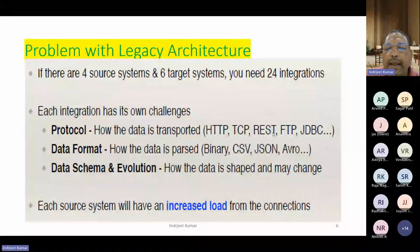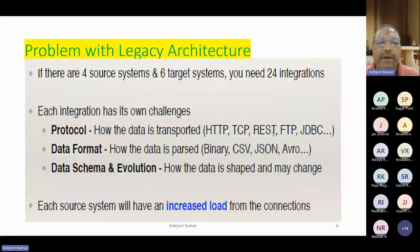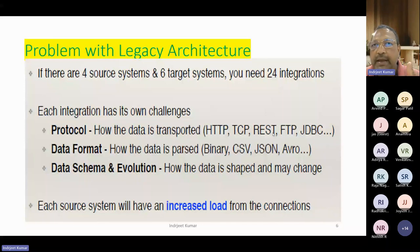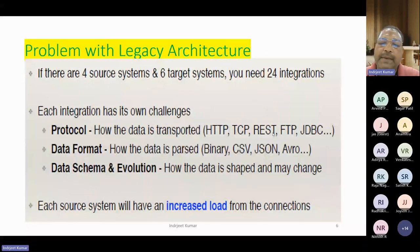When Kafka was formed, they were facing problems. In legacy architectures, for example, with four source systems and four target systems, we need to integrate — 4 times 6 is 24 integrations. And within these integrations we find different protocols: TCP, HTTPS, REST, FTP, JDBC. Now we are also seeing GraphQL, GRPC, and different data formats: binary, CSV, JSON, Avro, XML. Each source system increases load from connections. Kafka itself follows a schema.